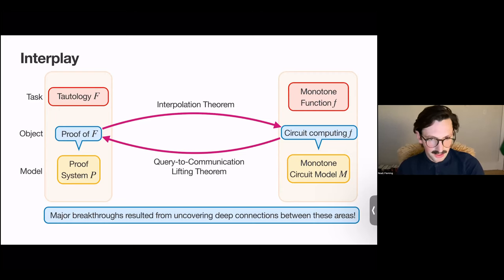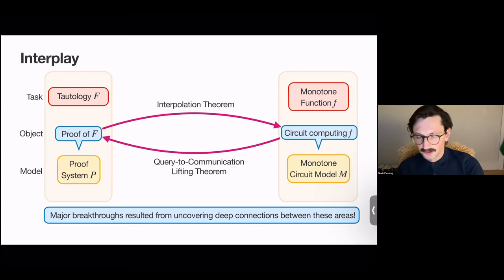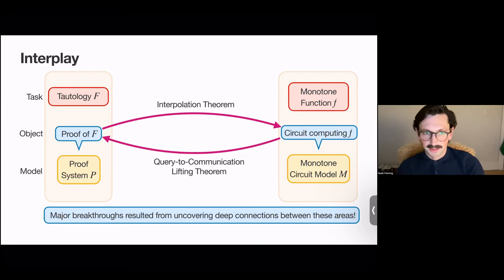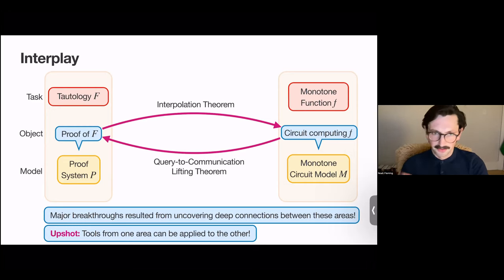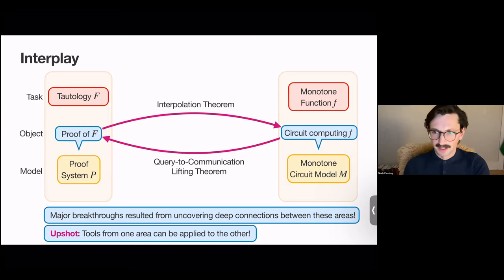These have been really impactful recently. They've resulted in a vast variety of new lower bounds, both in monotone circuit complexity and in a bunch of surrounding areas, such as communication complexity and extended formulations. The reason this is happening is that it allows us to use tools from a seemingly very different area, giving a new perspective which has been very useful.